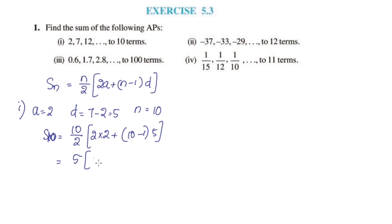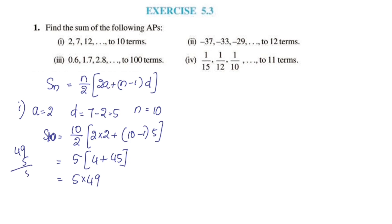5 into 2 twos are 4. 4 plus 10 minus 1 is 9. 9 into 5 is 45. This equals 5 into 45 plus 4, which is 49. 49 into 5: that is 4, 20, 24 — giving 245. So S10 is equal to 245.